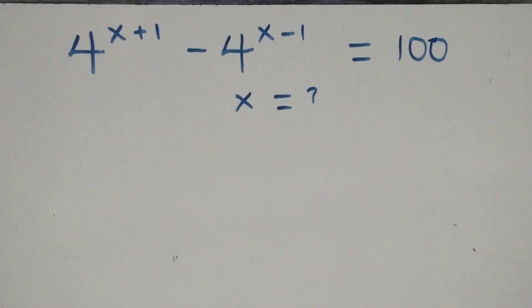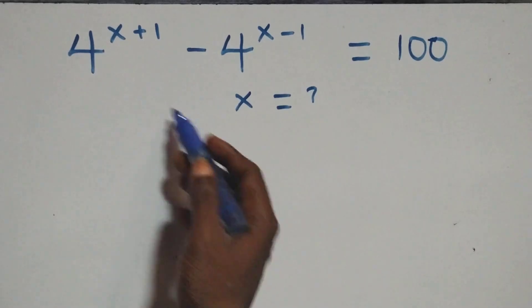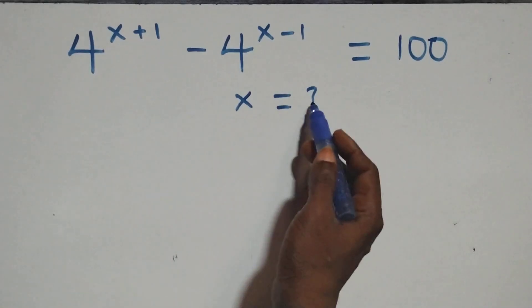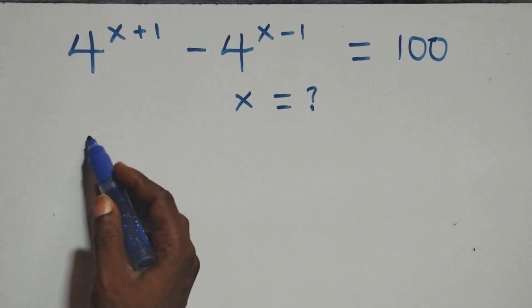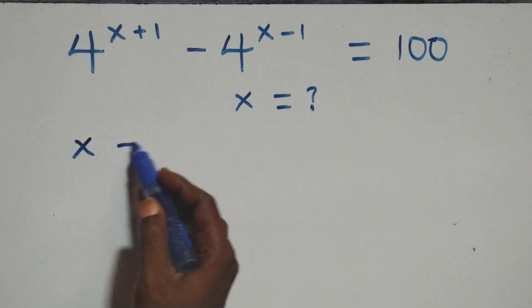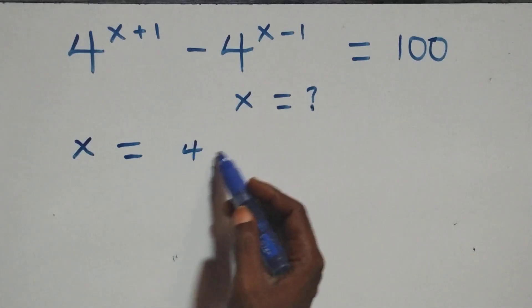That is the value of x: x equals to 4 plus log 5 base 2 minus log 3 base 2, all over 2. Then let's check here that this satisfies the given problem — we substitute the value of x.